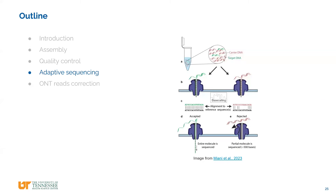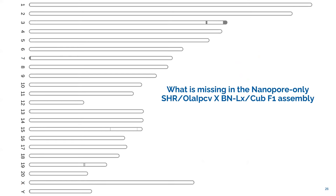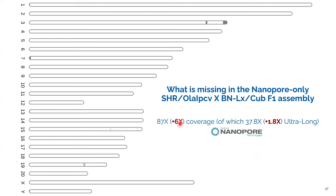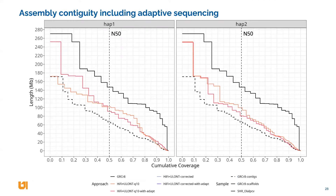We tried to improve assemblies by applying adaptive sequencing — another way to enrich for reads from regions of interest. We took the Nanopore-only assembly, mapped against the reference, checked what we were still missing, and enriched for reads from those regions — adding about 6x coverage from adaptive sequencing. Adding Hi-Fi reads plus the new Nanopore reads shows improvement in contiguity, with further improvement when corrected reads are added.